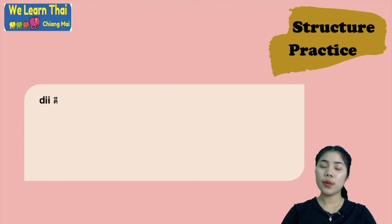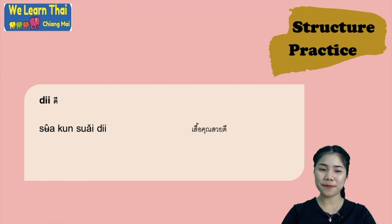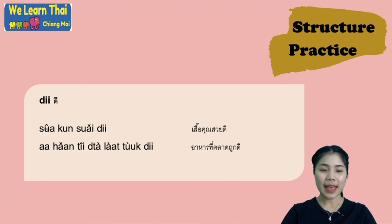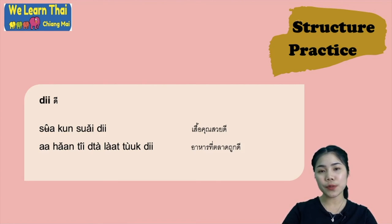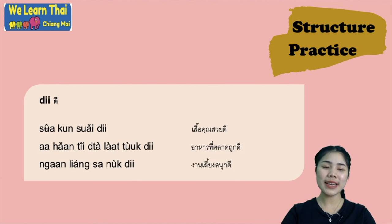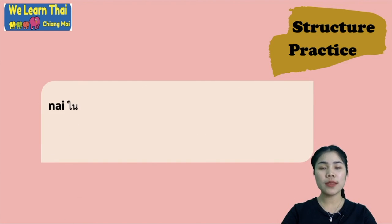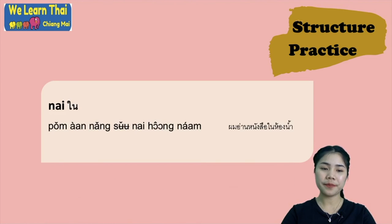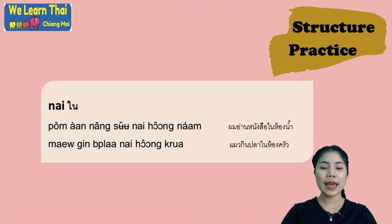And the next one with the word ดี — you can use ดี with adjectives. เสื้อคุณสวยดี — your shirt is beautiful. อาหารที่ตลาดถูกดี — the food at the market is a good price. งานเลี้ยงสนุกดี — the party was fun. And the next with the word ใน — it means in. ผมอ่านหนังสือในห้องน้ำ — I'm reading a book in the bathroom. แมวกินปลาในห้องครัว — the cat eats fish in the kitchen.